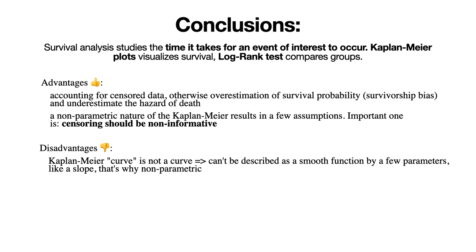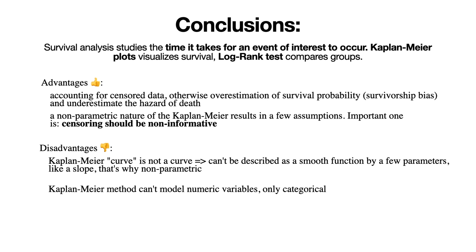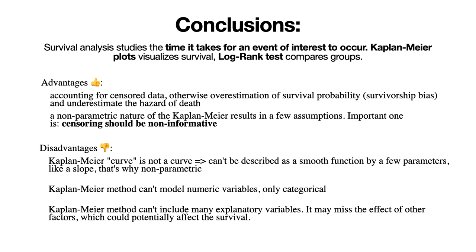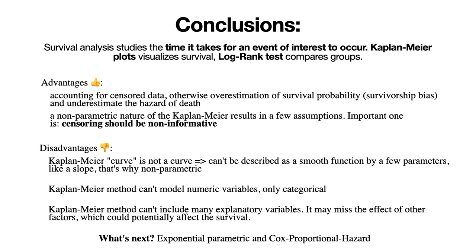Second, Kaplan-Meier can't model numeric variables — only categorical ones. Third, it can't include many explanatory variables; we always have one, be it sex with women and men, or ticket class with first, second, and third. Due to these disadvantages, it may miss effects of other factors that could potentially affect survival. If you ask what's next: models that solve these problems — exponential and parametric models, and Cox proportional hazard models, which I plan to cover in a future video.